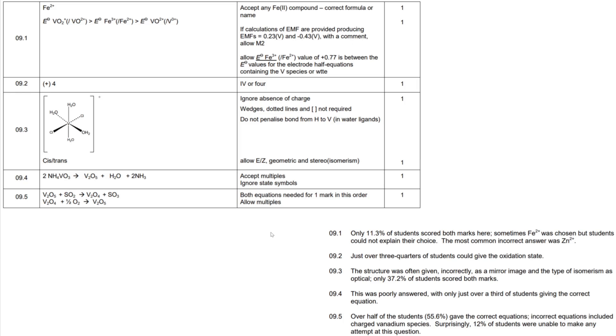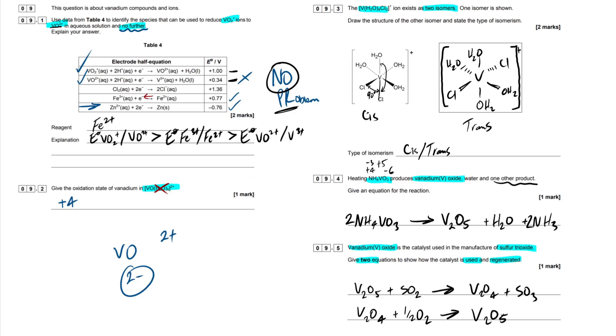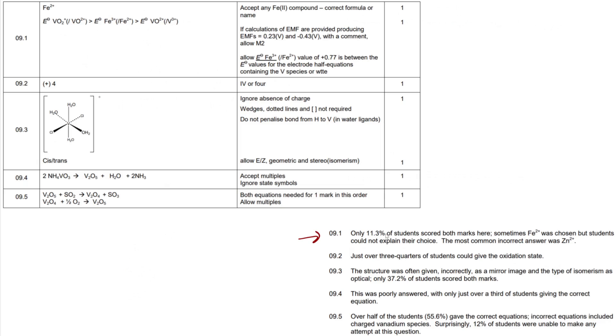Okay, guys, real quick, as always, examiner's report and mark scheme. So I'm not going to go over this mark scheme too much. Hopefully, you can pause the video, just check it out for yourself. Now, examiner's report is where I'm going to focus. So 9.1 then, only 11.3% of students scored both marks here. Sometimes iron 2+ was chosen, but students could not explain their choice. The most common incorrect answer was zinc. Not surprising, guys. Zinc is the common reducing agent when it comes on to the vanadiums. Now, you just have to really pay attention to this word here where they said no further. That's the key discriminator on whether you'd get these marks correct or not, I assume, based on the NOPR rule. Just really do your best to read the question carefully. Quite a tricky one based on how many students got it right.